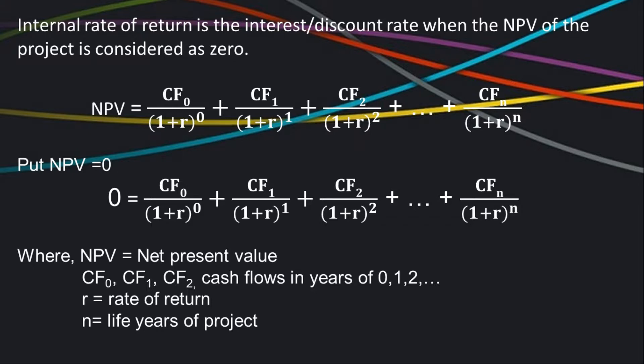Consider the formula for NPV. NPV is equal to CF0 divided by 1 plus r raise to 0 plus CF1 divided by 1 plus r raise to 1 and so on. Where NPV is net present value and CF0, CF1 are cash flows over the life of project.